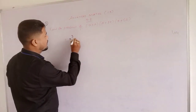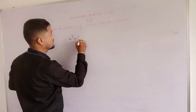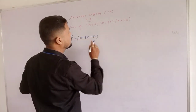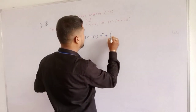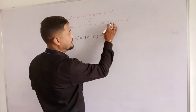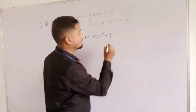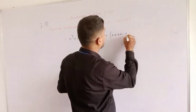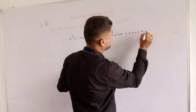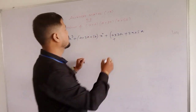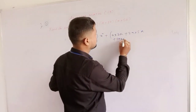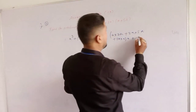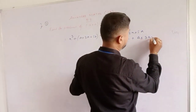x cube plus a plus b plus c — that is a plus 3a plus 5a — into x square, plus ab plus bc plus ca — that is a into 3a, plus 3a into 5a, plus 5a into a — into x, plus abc — that is a into 3a into 5a.